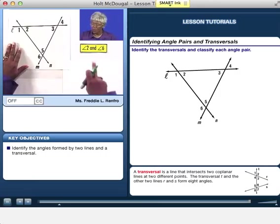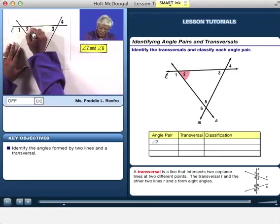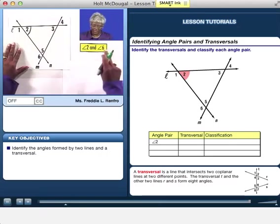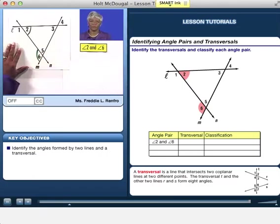We have angle 2, which is here, and angle 6. The transversal is N. N is our transversal.